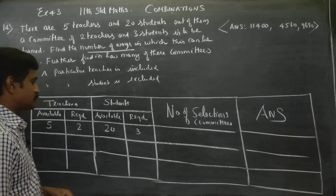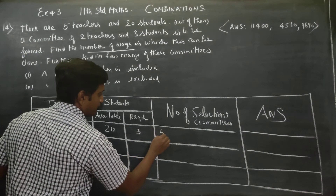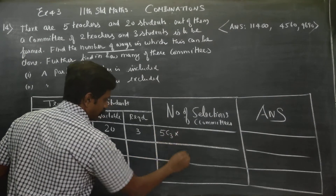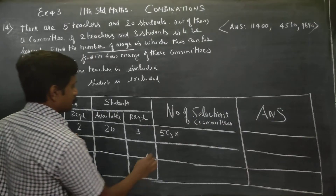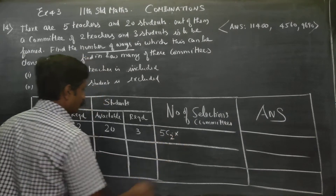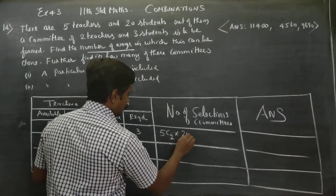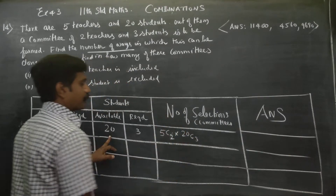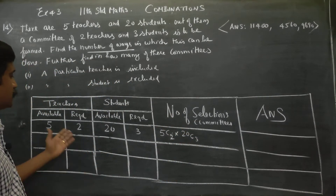Therefore, the number of selections is equal to: out of 5, you have to select 2 — that is 5C2 — and out of 20, you have to select 3 — that is 20C3. This is the selection.